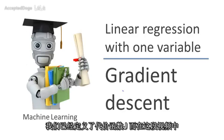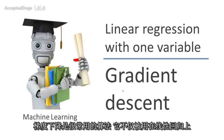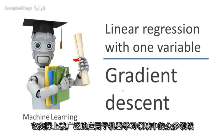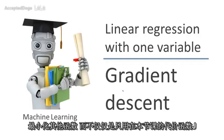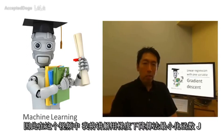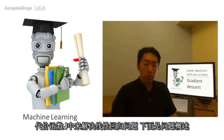We previously defined the cost function J. In this video, I want to tell you about an algorithm called gradient descent for minimizing the cost function J. It turns out gradient descent is a more general algorithm and is used not only in linear regression, but actually all over the place in machine learning. We'll use gradient descent to minimize other functions as well, not just the cost function J for linear regression. So I'm going to talk about gradient descent for minimizing some arbitrary function J, and then in later videos we'll apply it specifically to the cost function J we defined for linear regression.